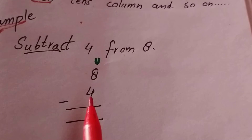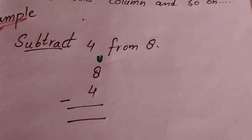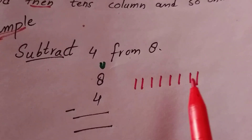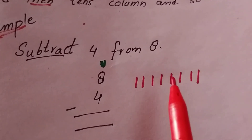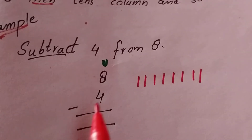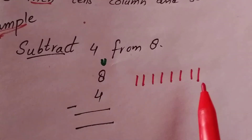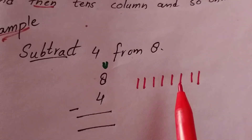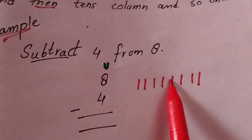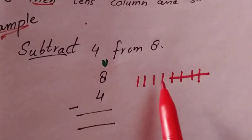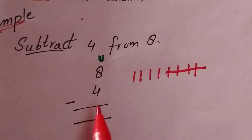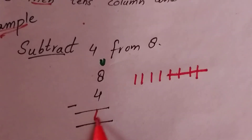Eight minus four. There are eight lines — one, two, three, four, five, six, seven, eight. We subtract four: one, two, three, four. The remaining lines are one, two, three, four. The answer is four.